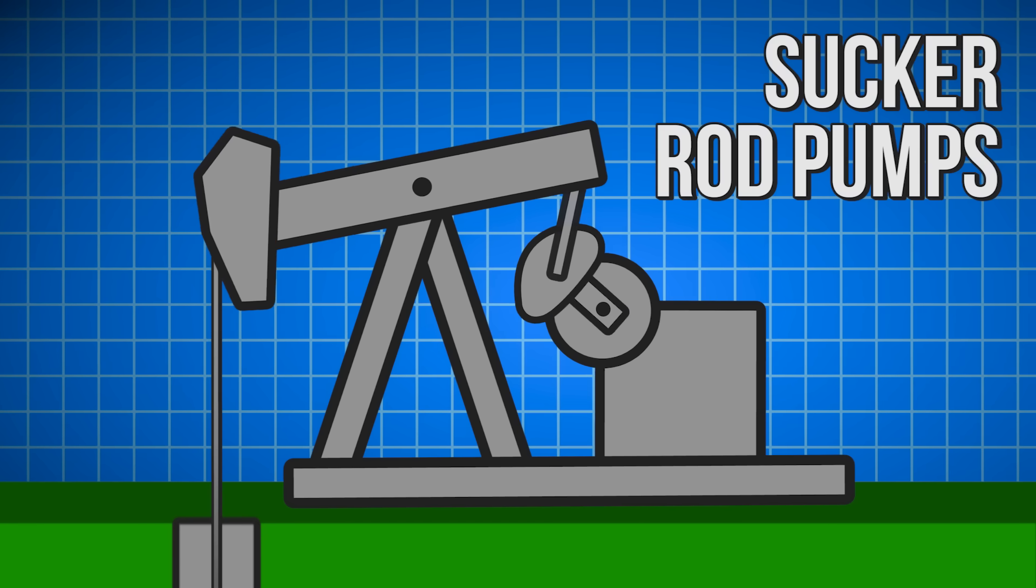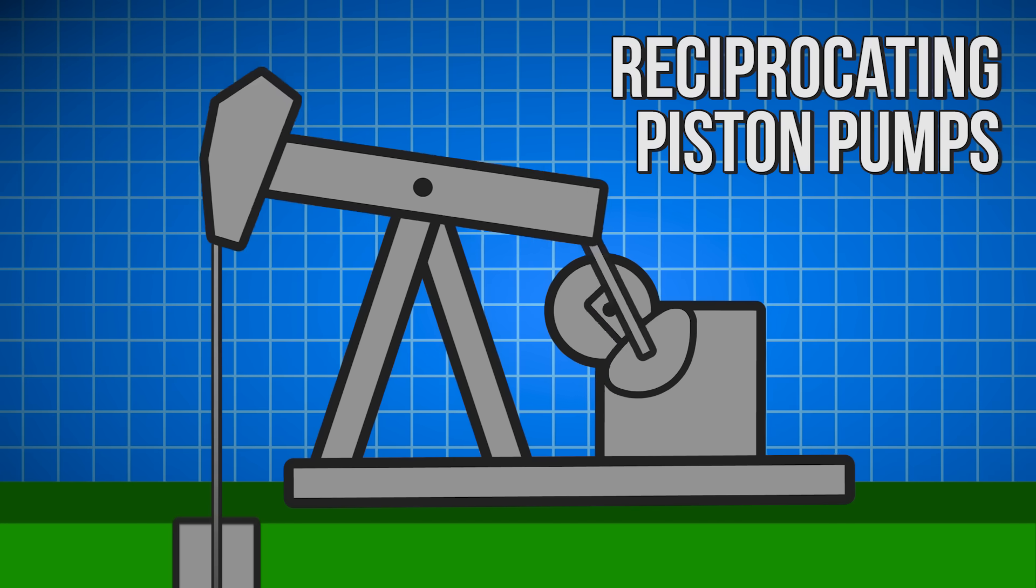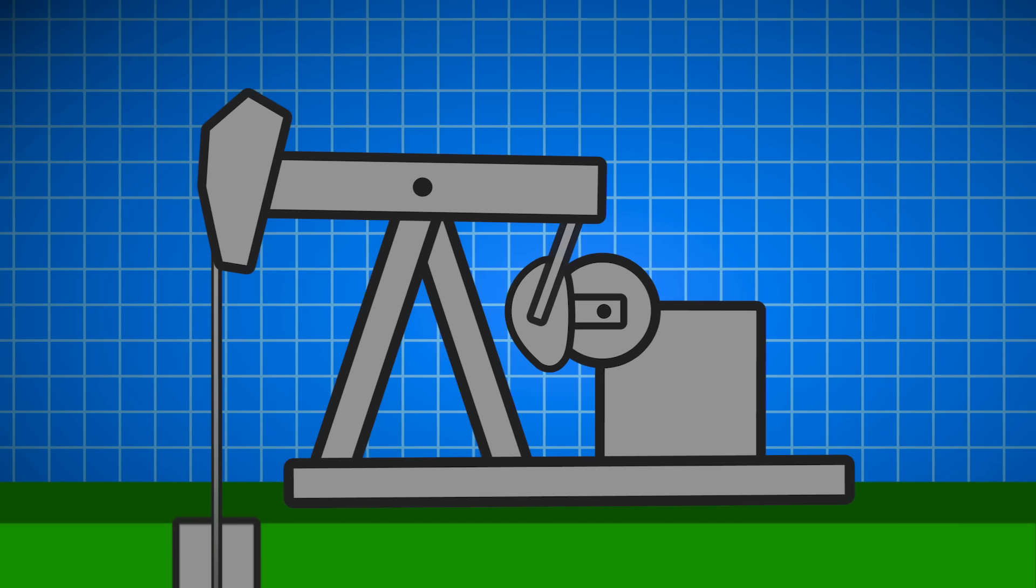They function as traditional sucker rod pumps, known more technically as reciprocating piston pumps and are made up of five main parts.